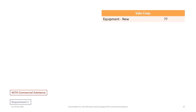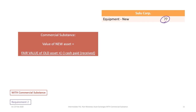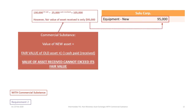Now turning to Sulu Corp, we begin with a debit to new equipment. The value of the new equipment depends on our commercial substance assessment. With commercial substance, the value of the new asset being acquired equals the fair value of the old asset being given up, plus or minus any cash paid or received. Sulu is receiving $25,000 cash, which offsets the fair value of the old asset going out. Sulu is giving up an asset with a fair value of $130,000.